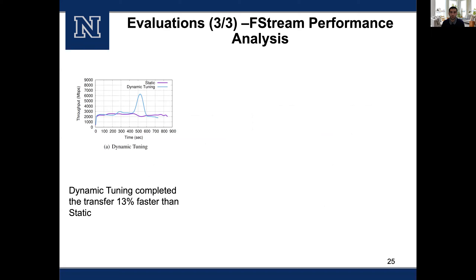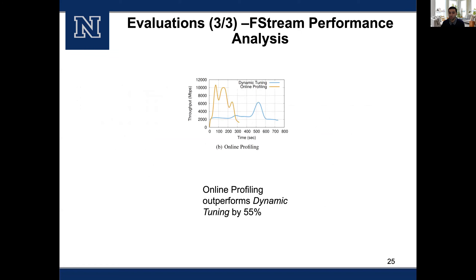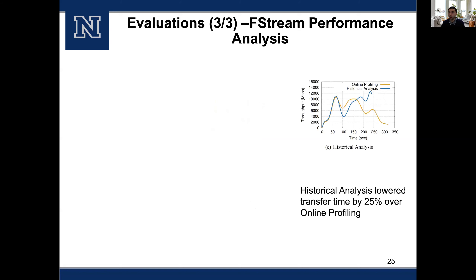We also examined how much each transfer optimization component contributes. Comparing static versus dynamic tuning — both using heuristics, but dynamic tuning executing the heuristic multiple times to adapt — we observed a 13% improvement. Comparing dynamic tuning with dynamic tuning plus online profiling yielded a 55% improvement. Adding historical analysis to form the complete FC Stream package produced a further 25% improvement. Essentially, each of these components contributes to the overall performance of FC Stream.